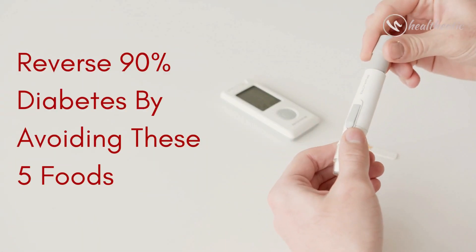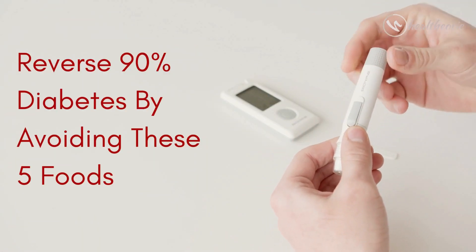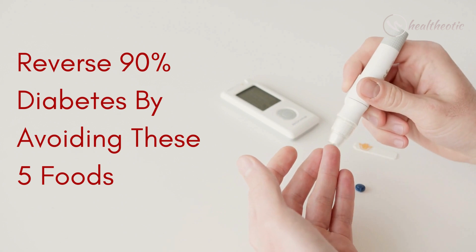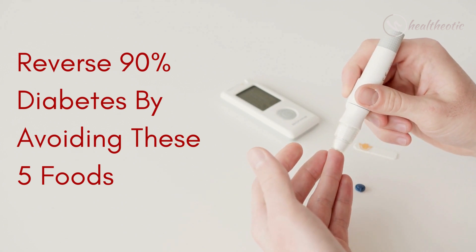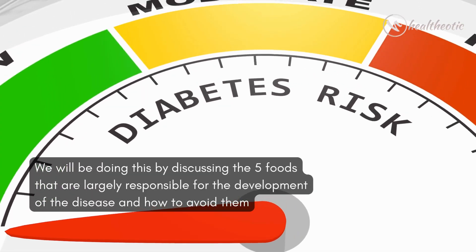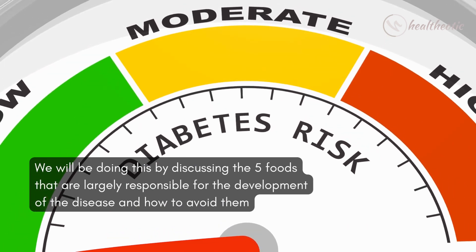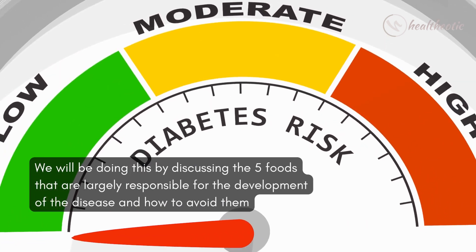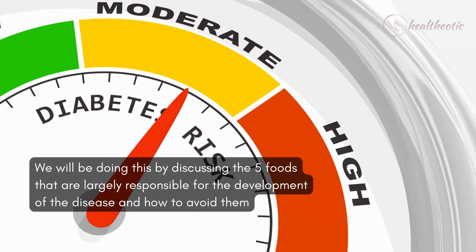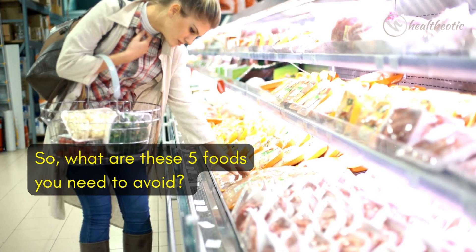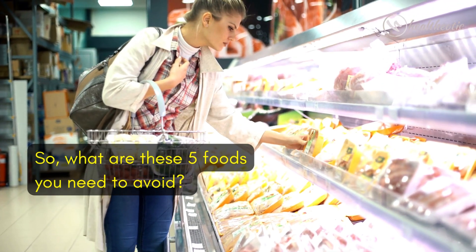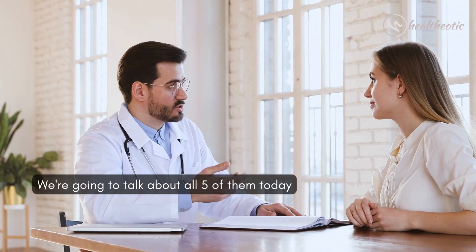Hello everyone. Today I am going to be talking about how to reverse diabetes — in particular, 90 percent of it. We will be doing this by discussing the five foods that are largely responsible for the development of the disease and how to avoid them.